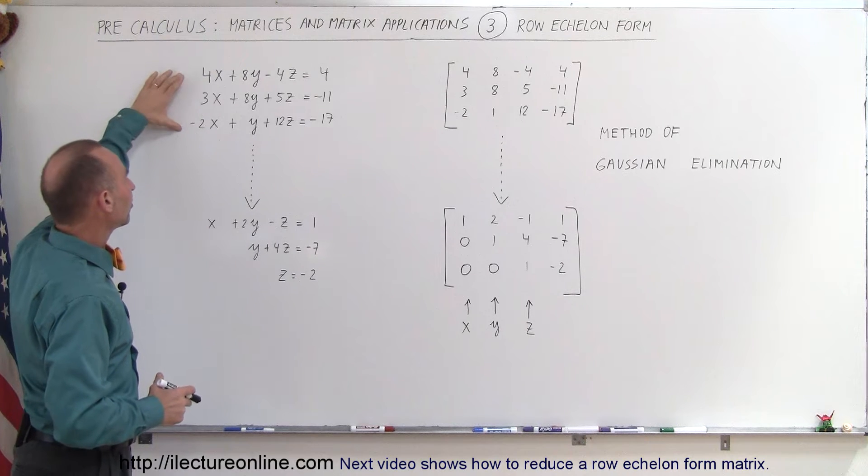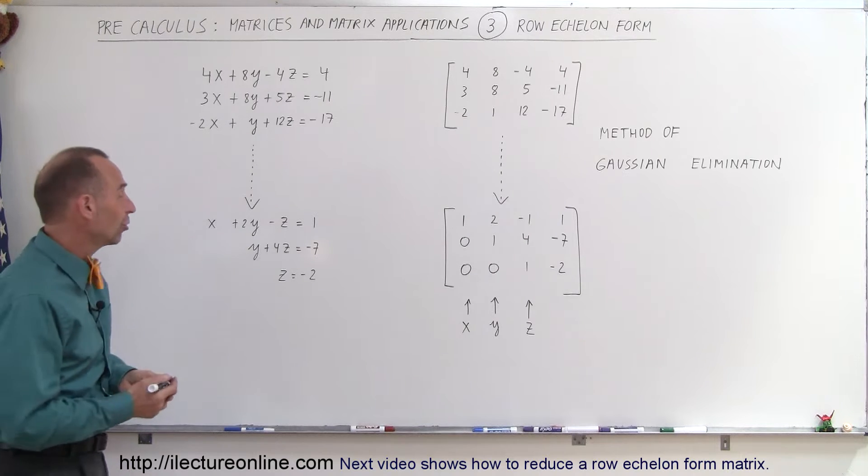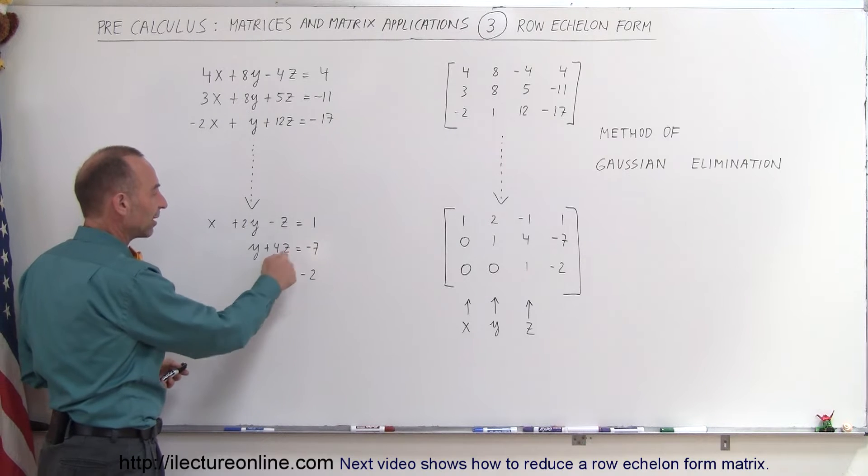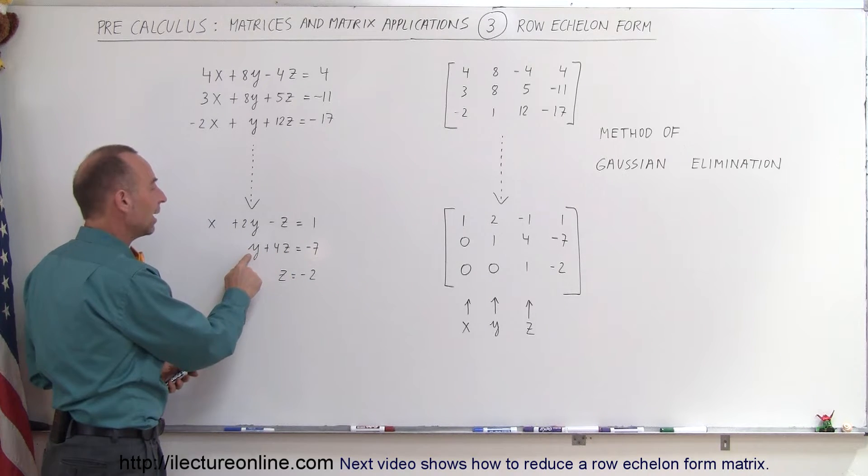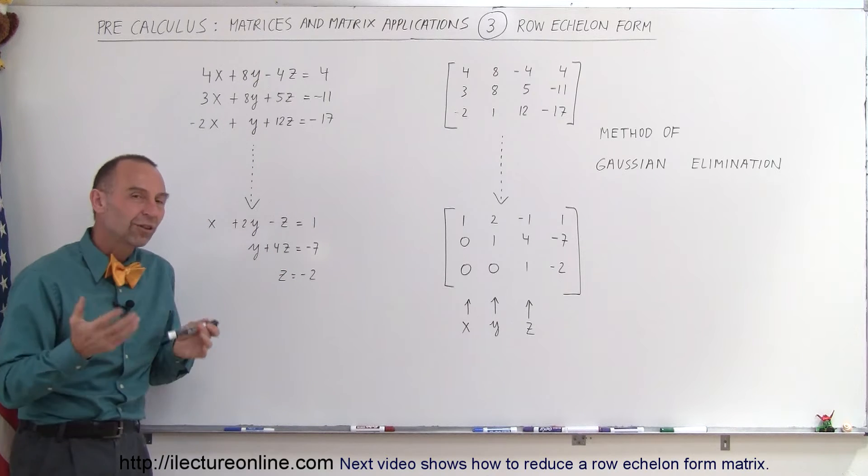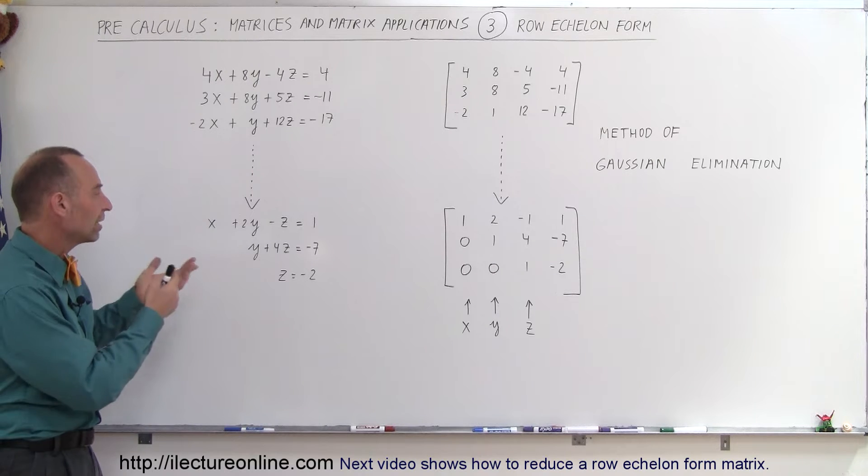Essentially, if we can go from this representation to this representation, we fairly well have the solution because at this point we know what z is equal to, z is equal to negative 2. If we plug that value in for here, we can solve for y, and then if we plug in the values for z and y in here, we can solve for x. So at this point, once we get to this form, it's fairly easy to solve for the three variables.